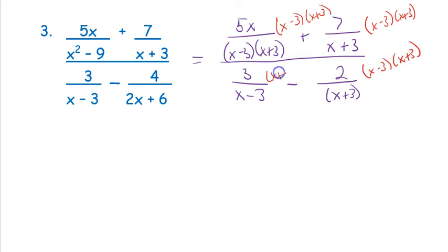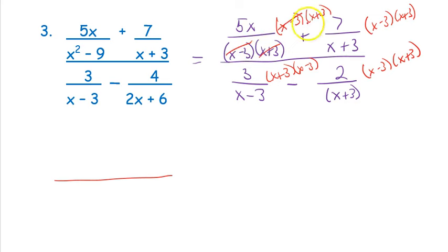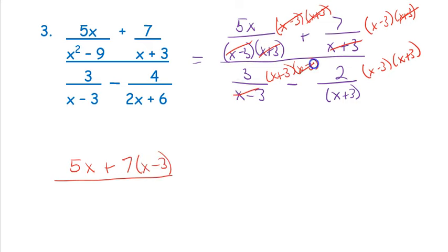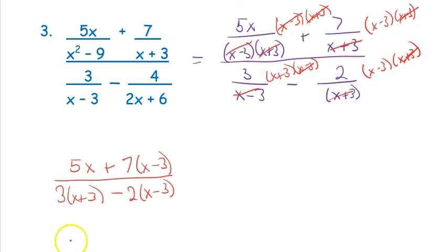Now I can start canceling and writing my new fraction. The (x − 3)'s cancel and the (x + 3)'s cancel, leaving 5x. Just the (x + 3)'s cancel, leaving 7 times (x − 3). On the bottom, just the (x − 3)'s cancel, leaving 3 times (x + 3). Then the (x + 3)'s cancel, leaving 2 times (x − 3).